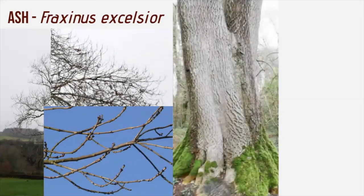In ash trees, the bark can become ridged. Ridging occurs when the new cork layer — the outer coat of the tree — is thicker and pushes the old dead cork outwards. It splits, creating either ridges or plates. In this case, it has created furrows and ridges.